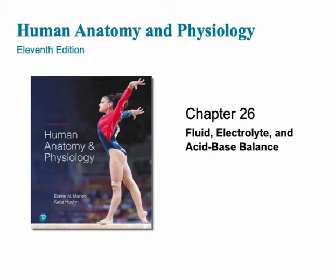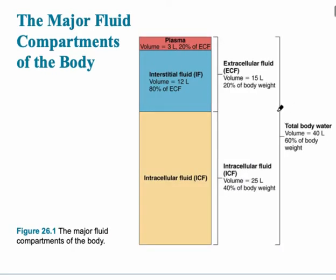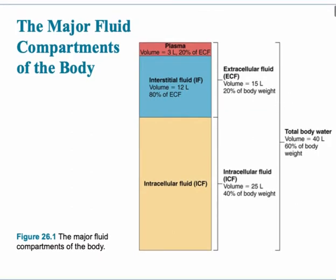This chapter covers fluids, electrolytes, and acid-base balance. We're going to start by looking at the major compartments within the body where the major fluids are. There are three major compartments, but we can combine two of them into one major compartment: the ECF, or extracellular fluid. That's approximately 20% of our body weight, and that's all the fluid that's outside of the cell. The large majority of that fluid is found in the tissue area, in between the cells.